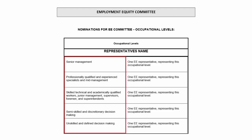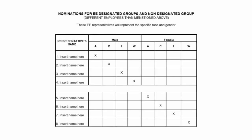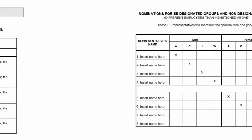Once you have identified through a formal nomination process the employees being the representative of that particular occupational level, your EAP committee will need to be constituted on an additional African male, African female, colored male, colored female, Indian male, Indian female, white male, as well as white female.